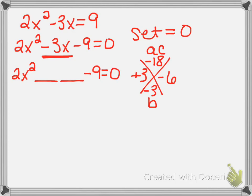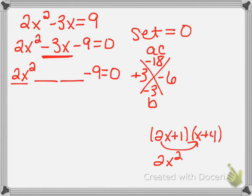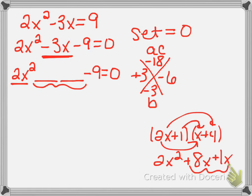Because if you remember, when you FOIL — let's say FOIL 2x plus 1 times x plus 4 — the first terms give you the quadratic terms, so that first term is just generated by the product of one pair. But the middle term is the result of both the outer and inner terms being multiplied together. The outer terms would give me plus 8x, and the inner terms would give me another plus 1x, and those combine to give a 9x.